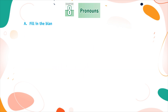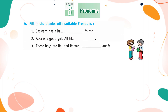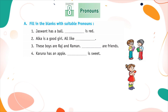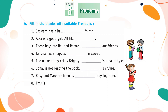Fill in the blanks with suitable pronouns. Jaswant has a ball. ___ is red. Alka is a good girl. All like ___. These boys are Raj and Raman. ___ are friends. Karuna has an apple. ___ is sweet. The name of my cat is Brighty. ___ is a naughty cat. Sonal is not reading the book. ___ is crying. Rosie and Mary are friends. ___ play together. This is a camel. ___ has a long neck.